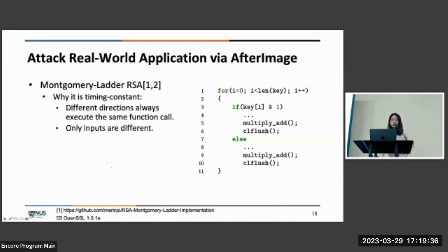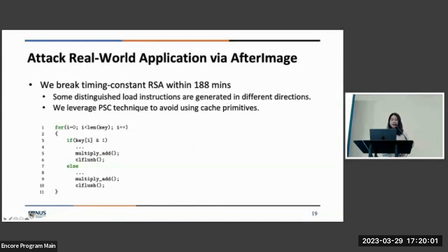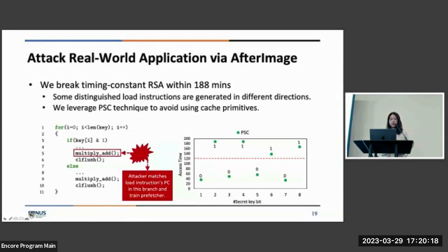Our target application is the Montgomery ladder RSA algorithm, which is a time-constant algorithm to defend against timing side channels by simply measuring the execution time of different branches. In this algorithm, different directions will always execute the same function call and only the inputs will be different. However, it still uses the private key to determine direction of the branch. We show that we can break this time-constant RSA within a short time. This is because some distinguished load instructions are generated in different directions. And the attacker can match load instructions PC in the E branch and train the prefetcher. We also use prefetch status checking technique to avoid using cache primitives. The horizontal axis represents the secret key bit and the vertical axis represents the access time. If the prefetch status gets reset by the victim, the attacker will no longer trigger prefetch and it will see a high access time.